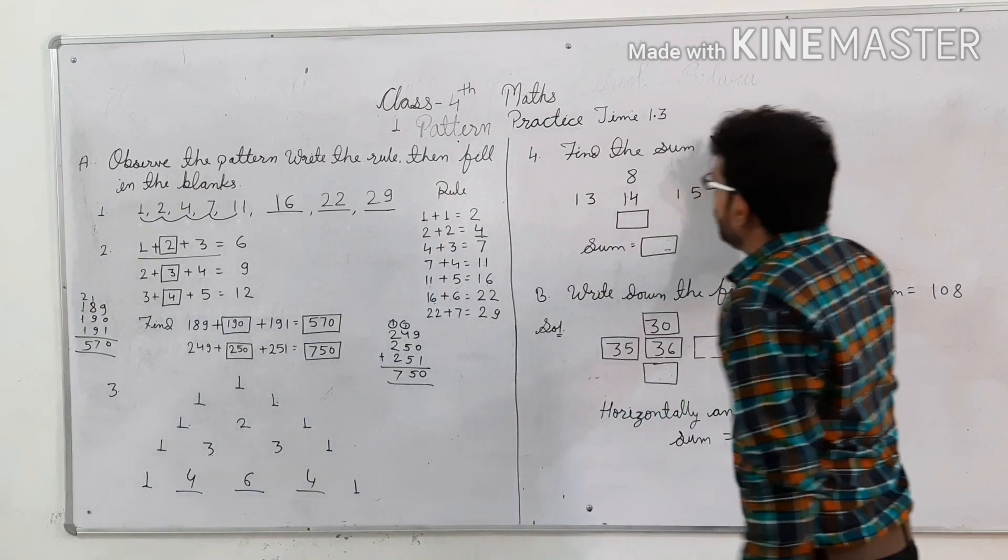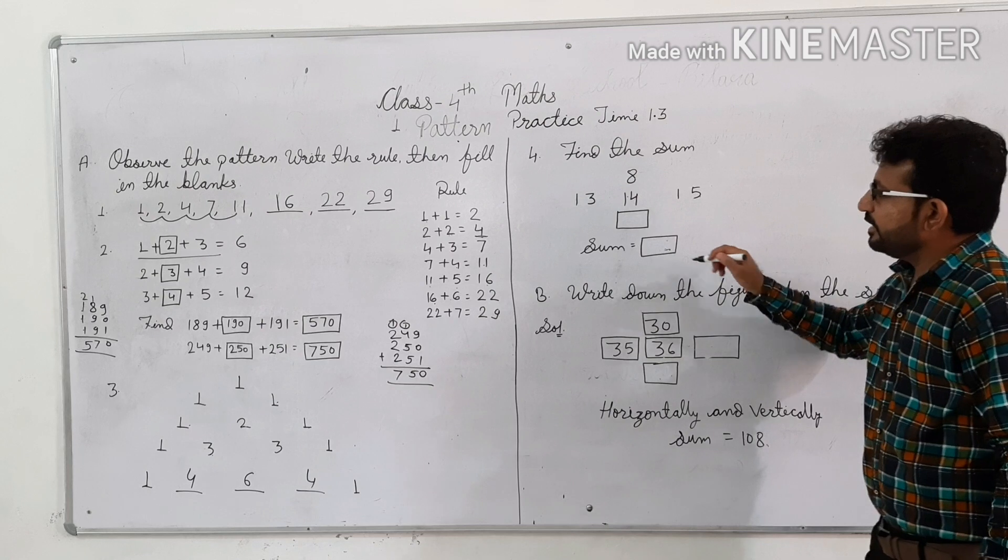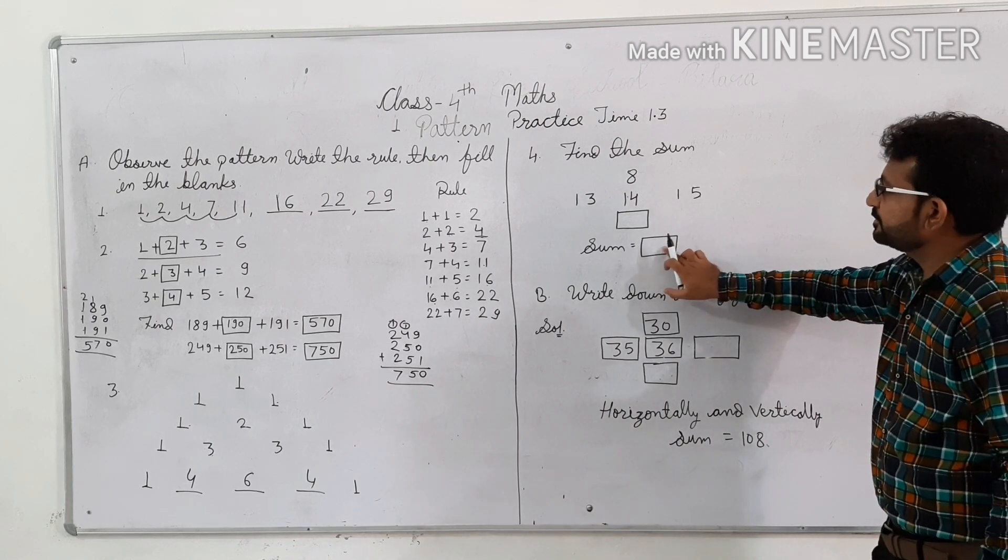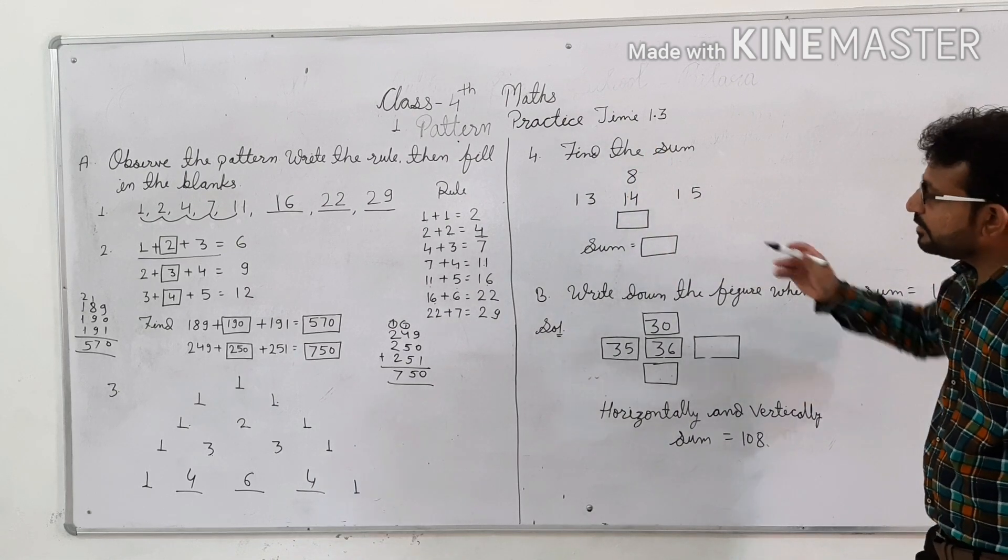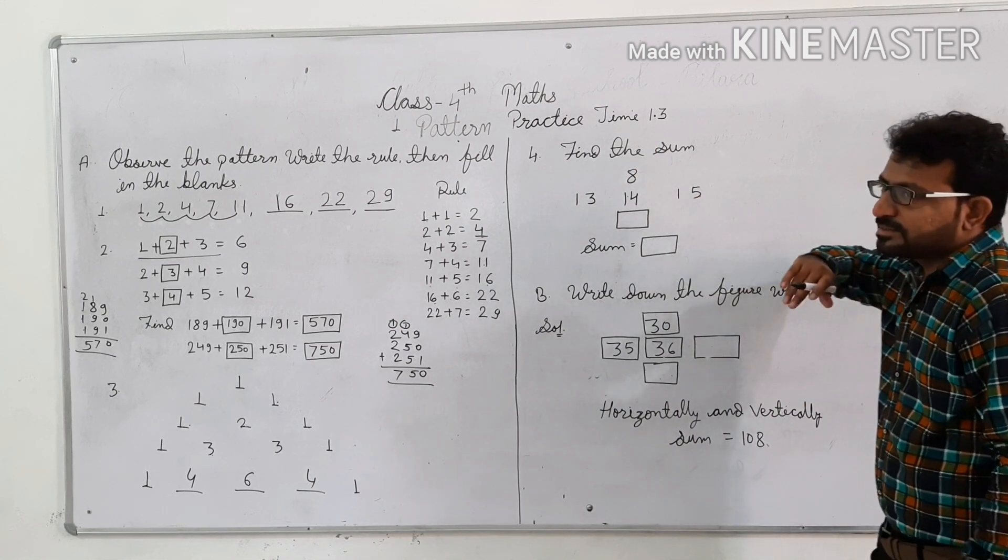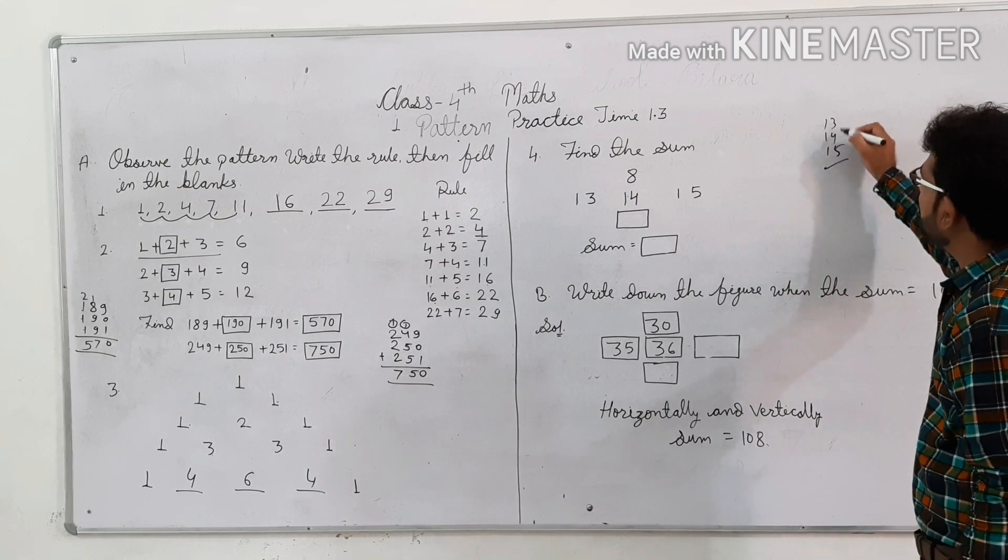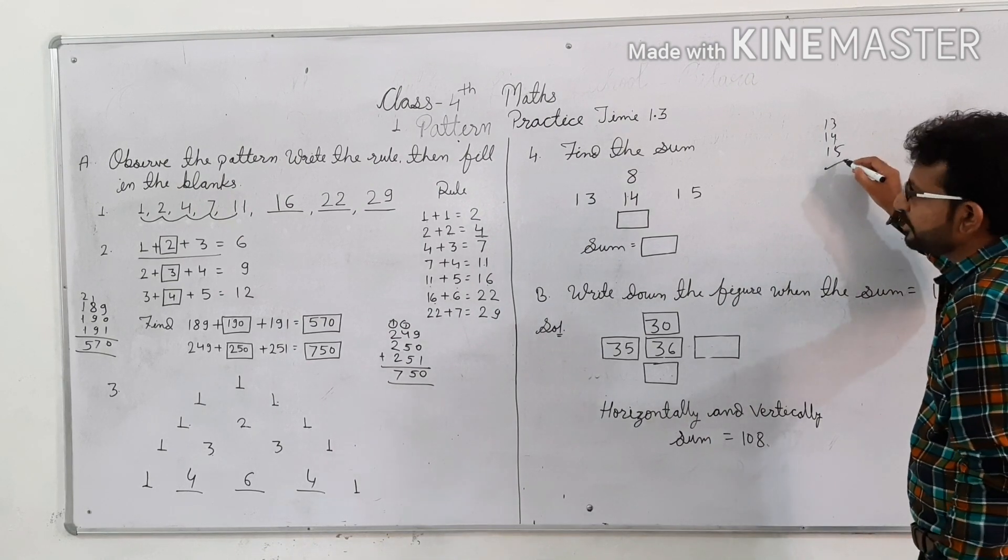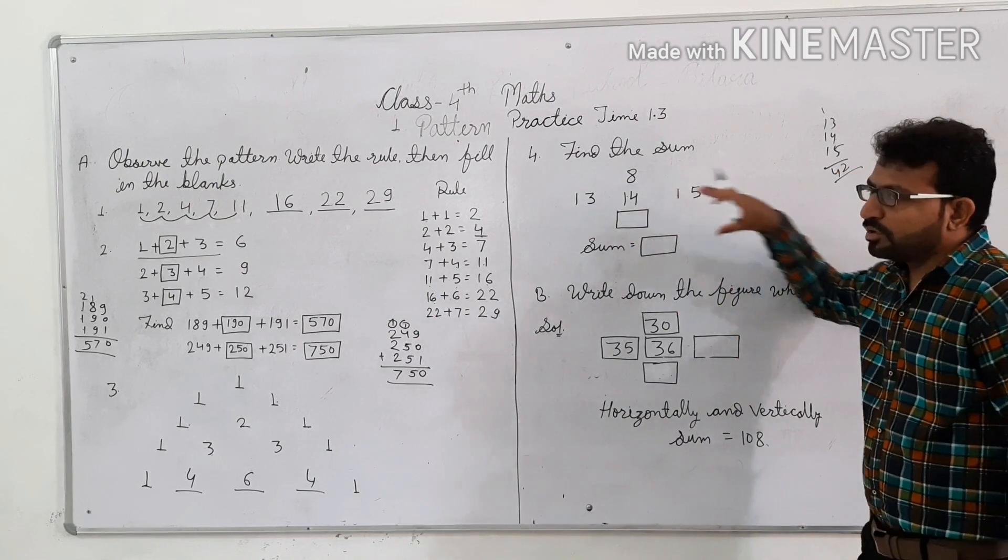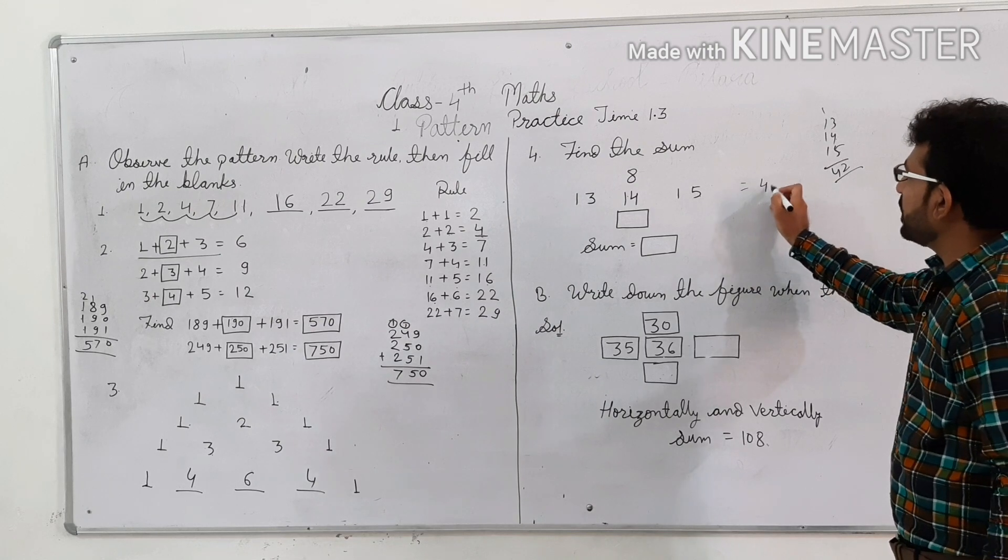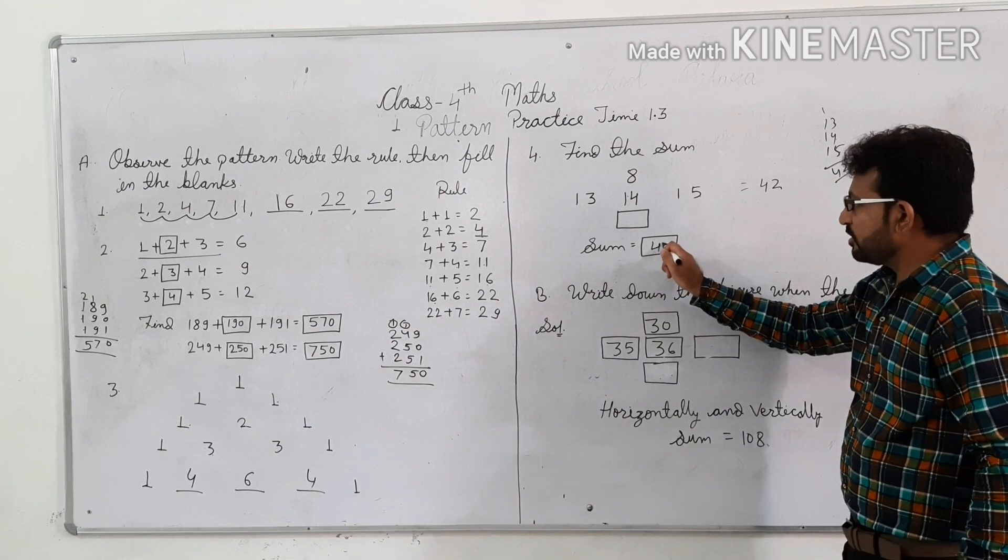Next one, question 4, find the sum. Find the sum means in this question horizontal sum, vertical sum. 13 plus 14 plus 15: 7 plus 5 is 12, and 1 plus 2 is 42. This horizontal sum is equal to 42. So we have to say vertical sum to what is 42.